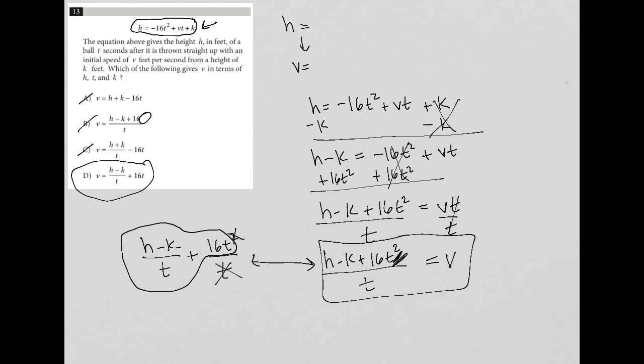So again, A and C automatically gone really from the first stage here because we don't have h plus k and then B is as enticing as it looks. You really have to ask yourself, how can this end up being that where the t is still here, everything is still there, but the t squared just disappears. That's impossible.